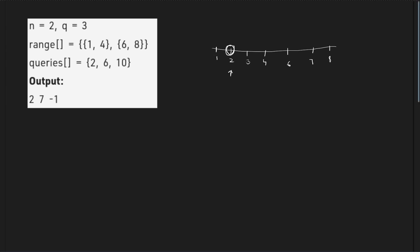Now you have to find the sixth smallest number: 1, 2, 3, 4, 5, 6 — so the sixth smallest number is 7. For the third query, you have to find the tenth smallest number. But since there are only seven numbers in this sequence, you cannot find the tenth smallest, so you print minus 1.